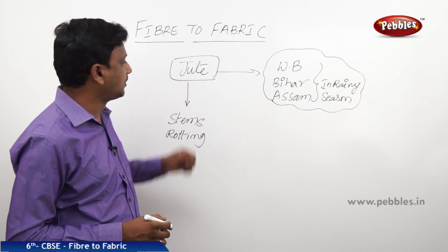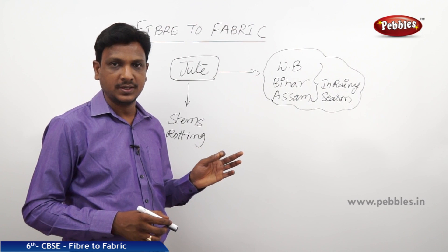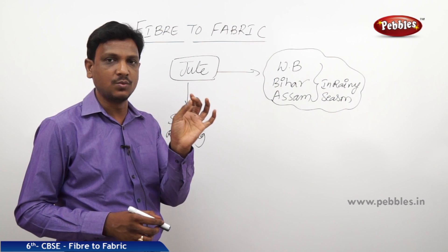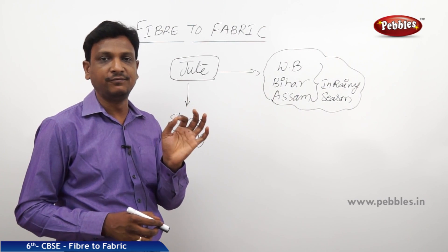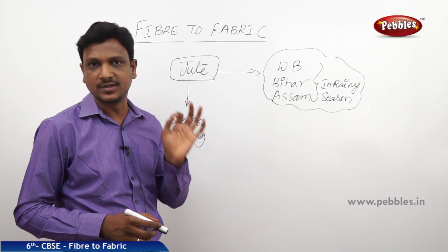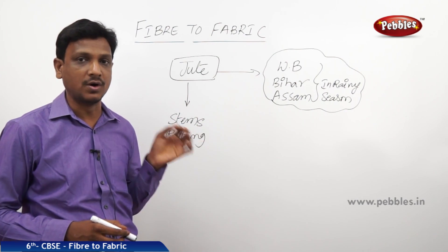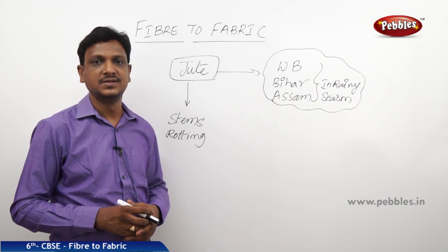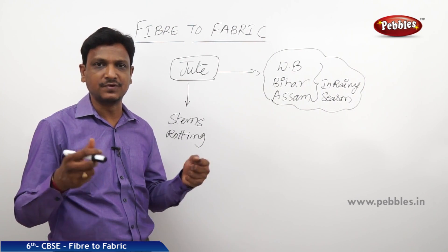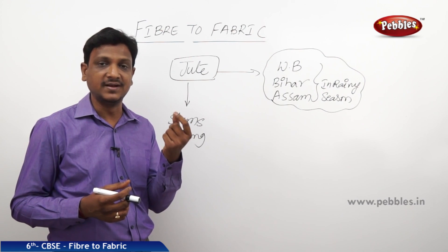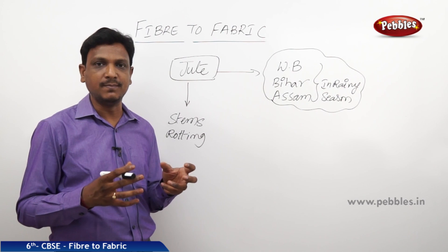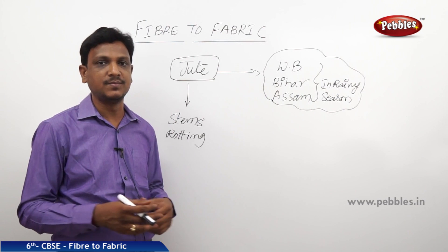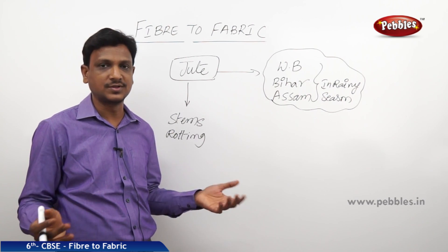The next natural fiber obtained from plants is jute. From plants we obtain two types of fibers — cotton and jute. Cotton is a very soft fiber used to make cotton cloth. Jute is also a fiber but it is coarse, used to make gunny bags, ropes, and packing materials. Nowadays machines can smoothen jute fibers, so jute cloth is also available in the market.